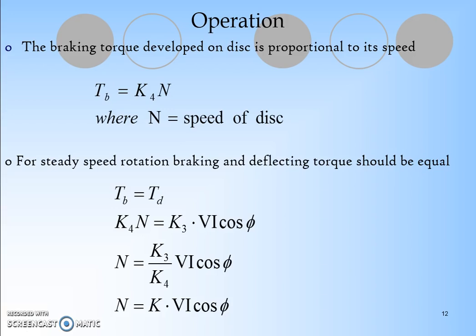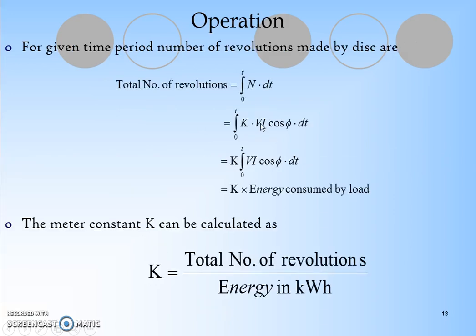The braking torque developed on the disc is proportional to its speed. If the speed increases, the braking effect also increases. T_b = K4·N, where N is the speed of the disc. The meter constant K can be calculated as K = total number of revolutions / energy in kilowatt-hour.